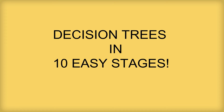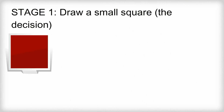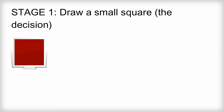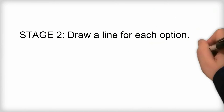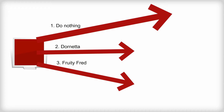Now we can construct and evaluate the decision tree in ten easy stages. Stage one: draw a small square on the left of your sheet — this symbolises the decision. Stage two: draw a line for each option and label the option by writing just above the line. Keep the lines reasonably far apart. In this example there are three options, but there could be more or fewer.